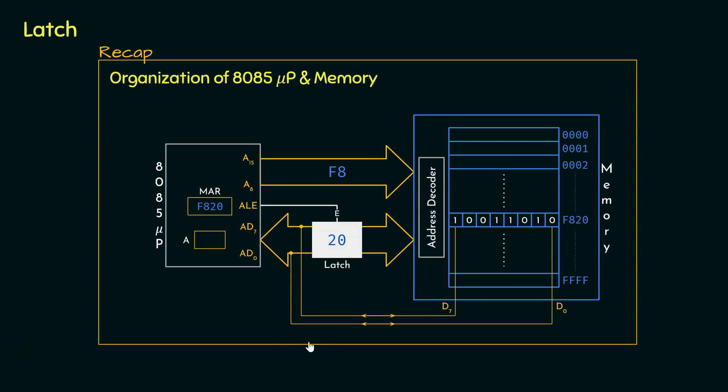During the concept of data transfer we have seen the latch, and we saw the latch was becoming helpful when the data channel was being freed so that the data transfer could happen. However, the address decoder requires the total address till the entire data transfer process is complete. Now since in 8085 the address and the data bus are multiplexed together, therefore we needed the latch.